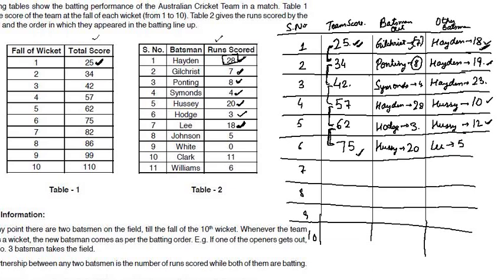The next wicket fell at the score of 82, a difference of 7. Lee needs to score 18 runs total; he already scored 5 and requires 13 more, but only 7 runs are present here. So the other person should be out — that is Johnson. Johnson was out at the score of 82 with 5 runs. The other 2 runs were scored by Lee, giving Lee 5 plus 2 = 7 runs so far.